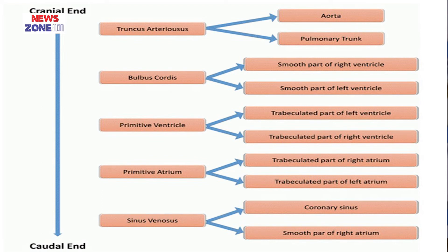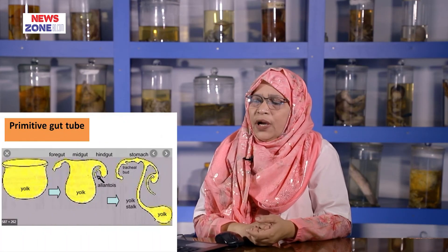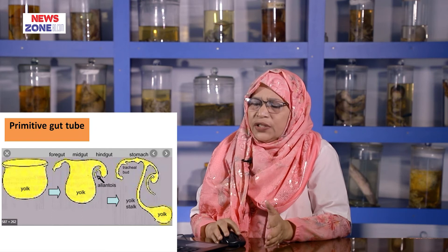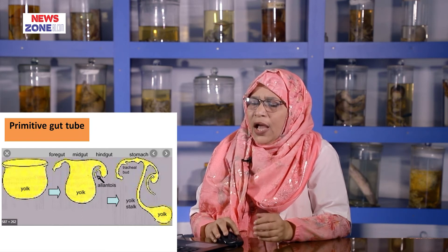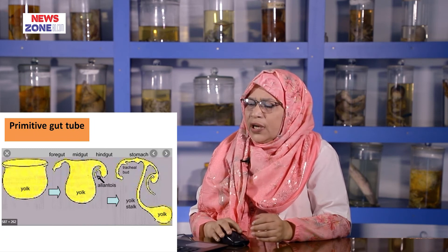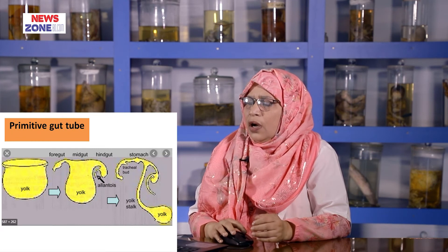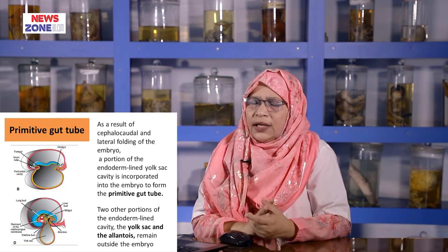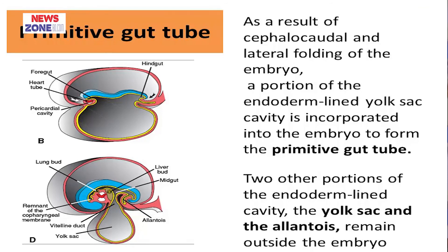The smooth part of the left atrium develops due to the absorption of the four pulmonary veins. Now the primitive gut tube. The yolk sac is mainly responsible for the formation of the primitive gut tube. The yolk sac is lined by endoderm and gradually incorporates to form an elongated primitive gut tube. The primitive gut tube results from the cephalocaudal and lateral folding of the embryo. A portion of the yolk sac is gradually incorporated into the embryo at the fourth week of development, with some portion of the yolk sac and allantois remaining outside the embryo.